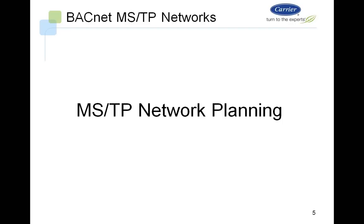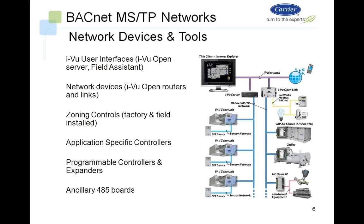Looking at MSTP network planning, we have network devices and tools. We have the network user interface — your iView Open server or a field assistant. We have network devices, which are your routers and links. We have zoning controls, which could be either factory or field installed. We have application-specific controllers such as the water source heat pump or unit vent, programmable controllers and expanders such as the UC Open and UC XP, and ancillary 485 boards.